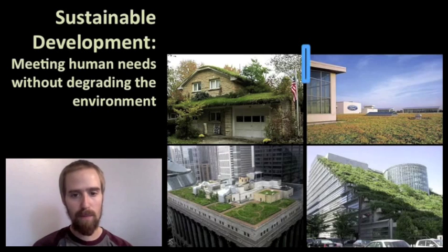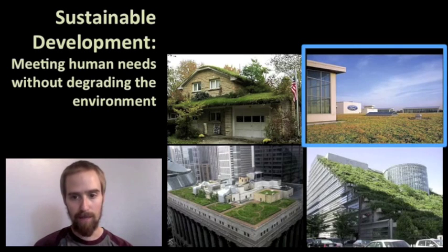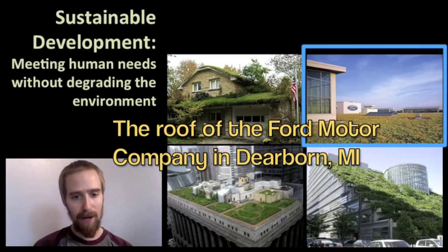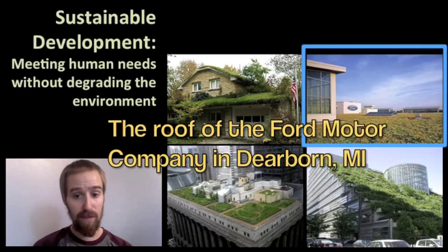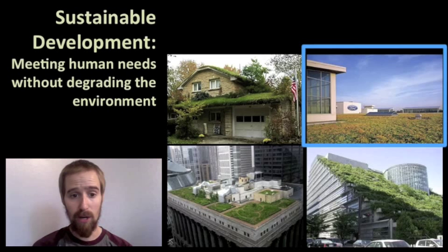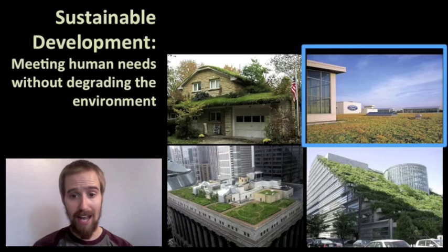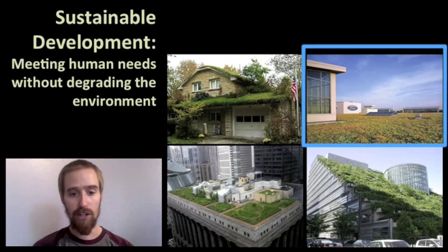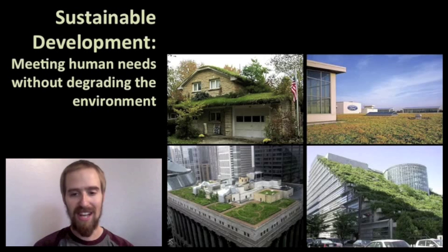Green roofs, like the one at the Ford Motor Company in Dearborn, Michigan, are designed to promote primary productivity — the plants at the bottom of the food web. These plants, like a natural prairie ecosystem, support birds, insects, and small mammals, and also help to filter and clean rainwater and runoff, keep the building cool, reduce energy costs, and help protect the building from ultraviolet radiation, meaning the structure will last longer. It's essentially a 10.4-acre garden, and it is beneficial for both humans and the environment.